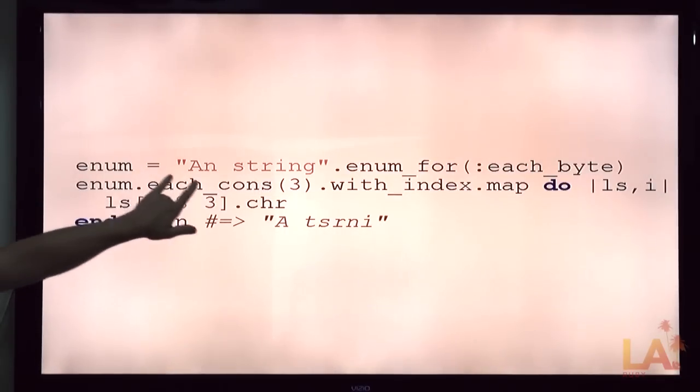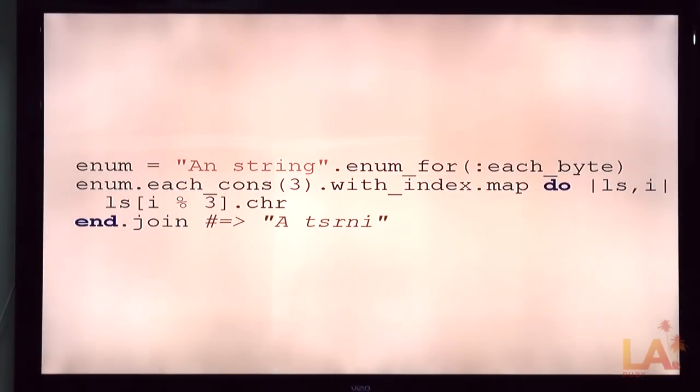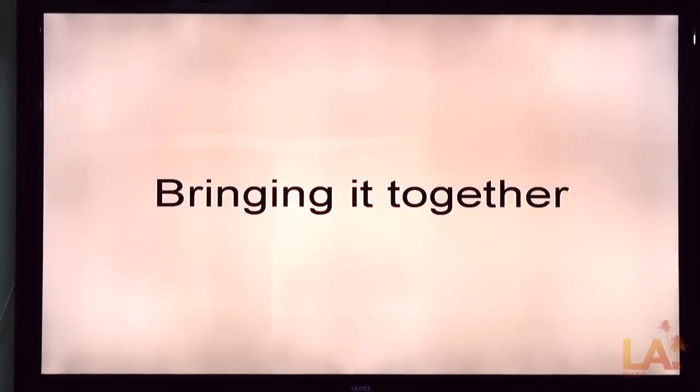So we're taking from a string, we're taking each cons, so each consecutive three, adding an index to it, mapping that to the character out of that list that is the modulo of three of the index. So we're taking each group of three and picking one of them based on where we are in the list. And the result is that we're sort of slightly tangled version. Not a practical example. But it at least demonstrates that you can do that kind of crazy mapping stuff that, you know, chaining of enumerators that might not otherwise be obvious.